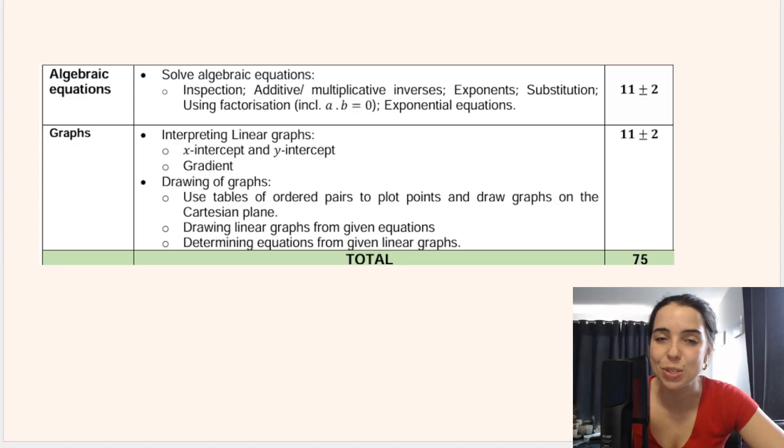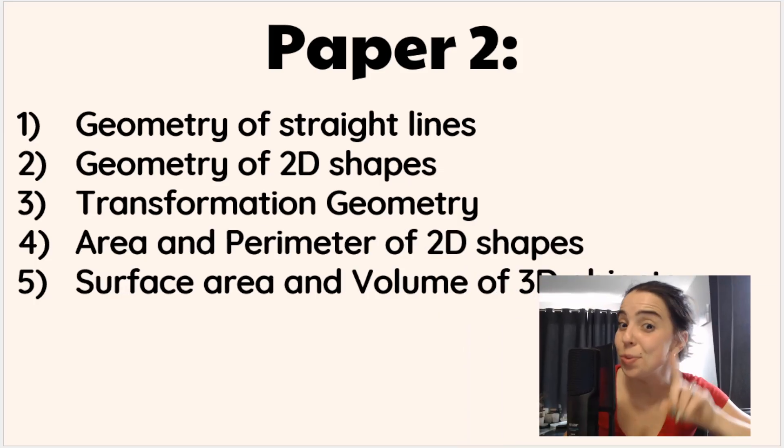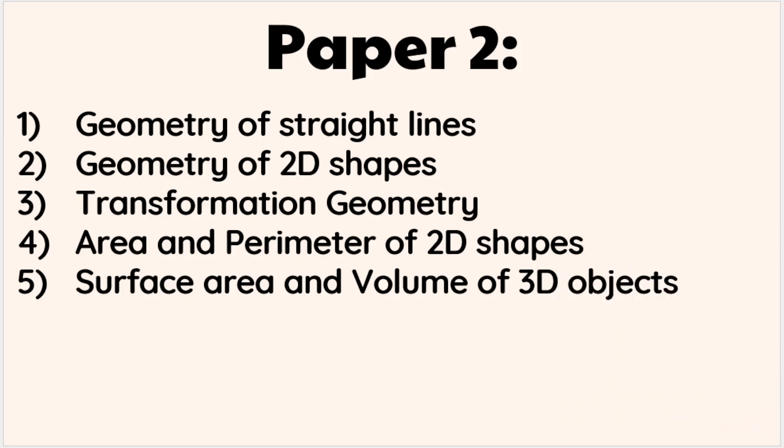So this is an overview of the topics for paper two, starting with geometry of straight lines, geometry of 2D shapes, transformation geometry. I just removed functions and relationships because that's paper one, but we've got area and perimeter, surface area, and volume.